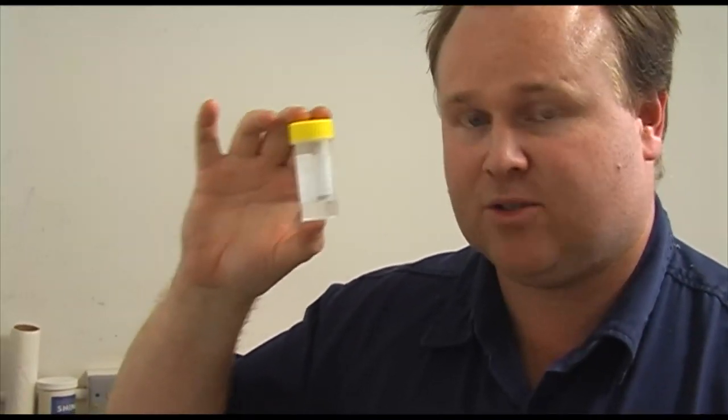And what we end up with is a sample that has the nematodes. And from this, we're able to take a 1 mL subsample and then count that on a slide. And it lets us work out how many nematodes per kilogram of soil were in the pot.